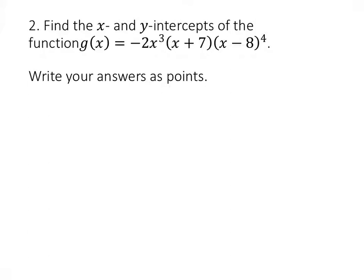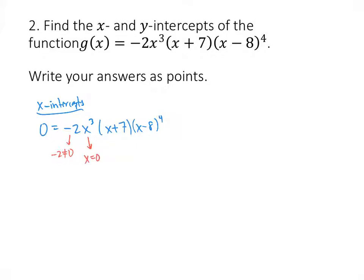Similar question — we're given a factored polynomial equation and we want to find the x and y intercepts. Starting with x-intercepts, that's where y equals 0, giving us 0 equals negative 2 times x cubed times (x plus 7) times (x minus 8) to the fourth power. By our zero product property, one of those factors has to be 0. Negative 2 can't be 0. x cubed gives us one solution, x equals 0. x plus 7 gives us x equals negative 7.